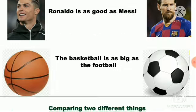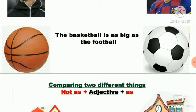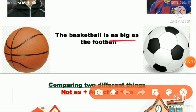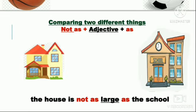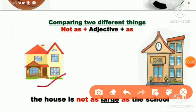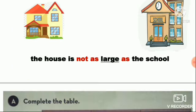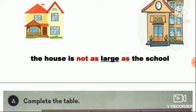Next example — yaha pe basketball hai, football hai. Dono equally equal size ke hai. Basketball is as big as the football — hum nahi bol sakte koun sa jyadha bara hai. In certain cases where things are unequal — yeh wala chhota hai, yeh bara hai — the house is not as large as the school. School se jyadha bara nahi hai house. School is more large than the house.